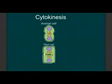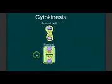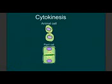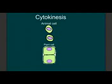As we move through this process, we can see the cleavage furrow indenting further and further, and we can see the cell plate extending from the middle out until it eventually breaks the cell into two. We have finished cytokinesis, and we have two cells.